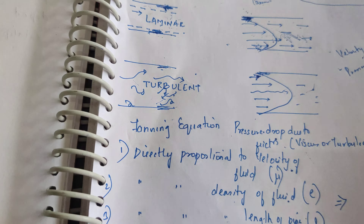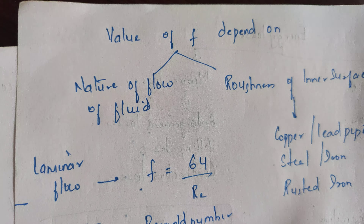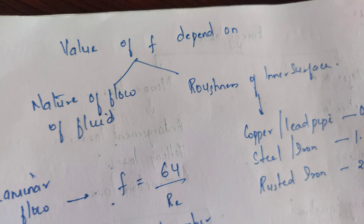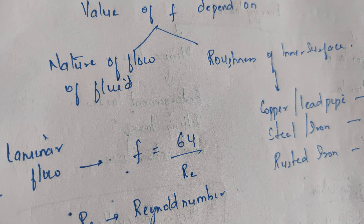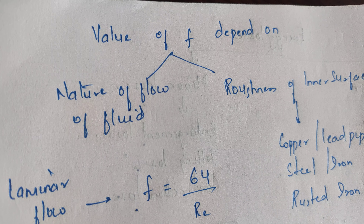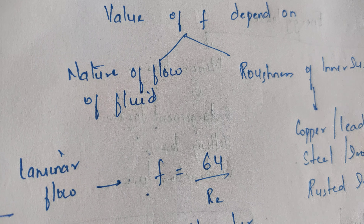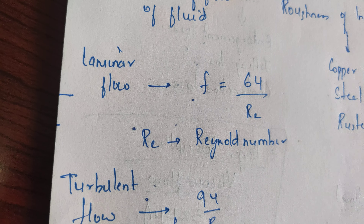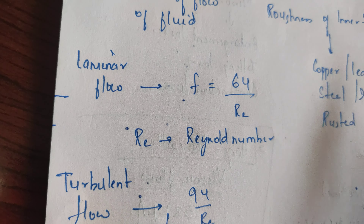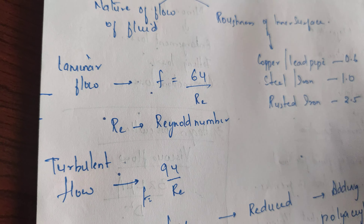The frictional factor f depends on two things: the nature of the flow of fluid and the roughness of the inner surface. The flow of fluid may be either laminar or turbulent. For laminar flow, the frictional factor is 64/Re, where Re is the Reynolds number. For turbulent flow, the frictional factor is 0.094/Re.